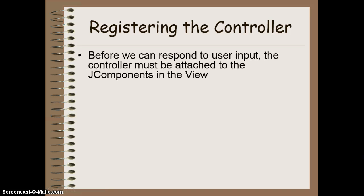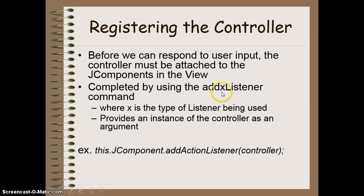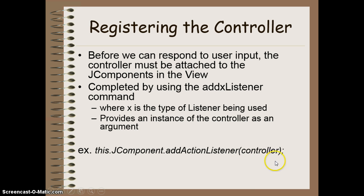Before we can actually make this work, we have to tell the view that the components there have a listener — have code that is going to respond to an action that happens. This is done by using an addSomethingListener command, where this 'something' is the type of listener: addActionListener, addMouseListener. This is going to provide an instance of the controller as an argument. So the component in my view gets an action listener added to it, and I provide the controller class that is going to have the actions we want to happen when that particular component is interacted with.